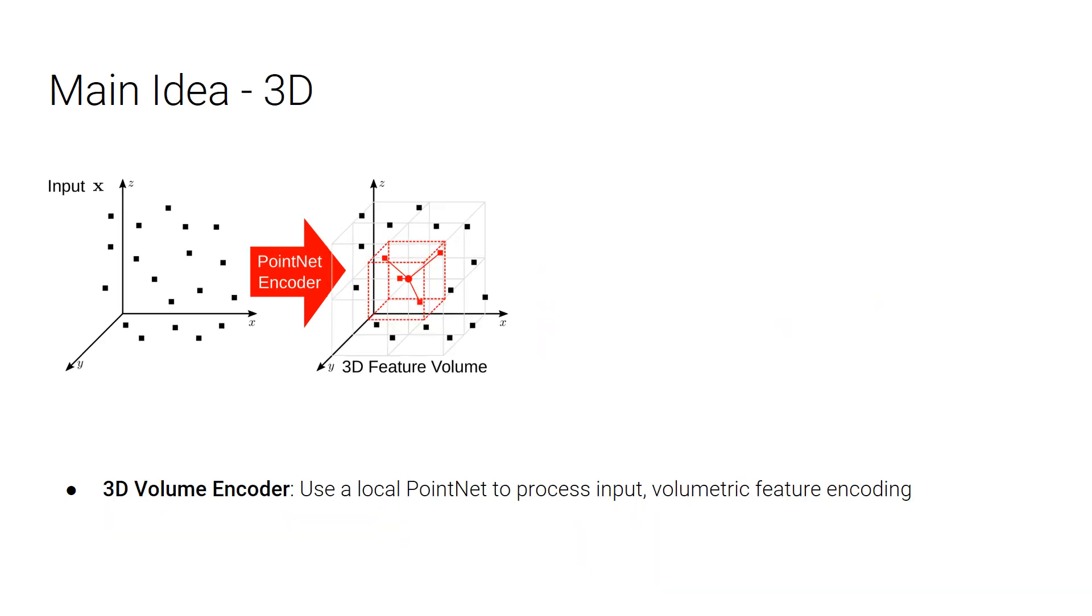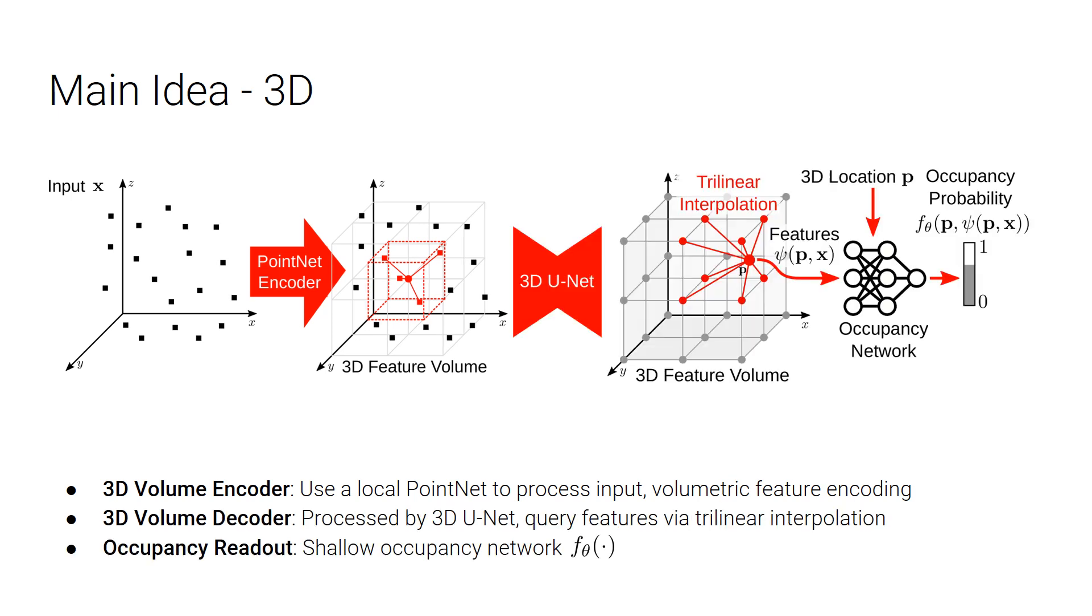In addition to projecting into canonical planes, we can also use a volumetric representation and encode local information into the volumetric space, as shown in the red box here. We then have a 3D U-Net that operates on this 3D coarse representation. And we again have a readout unit in the form of a shallow occupancy network. But in order to obtain features for particular locations, we now query the feature from adjacent voxels using trilinear interpolation.